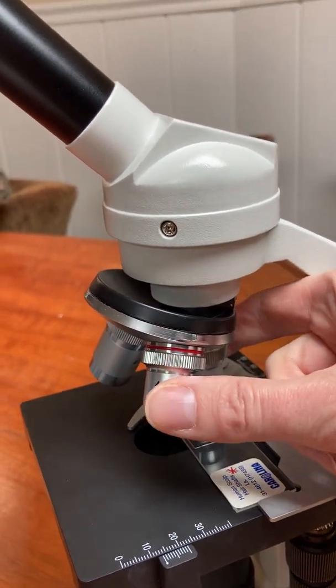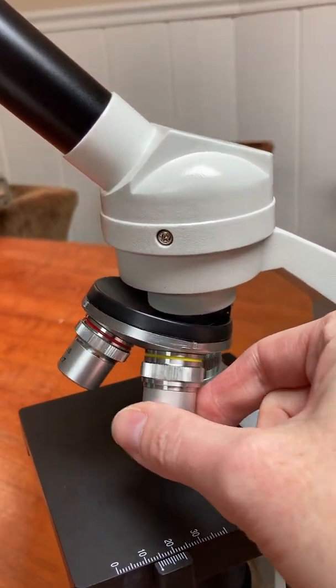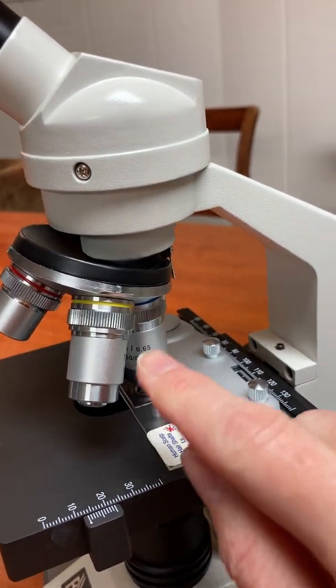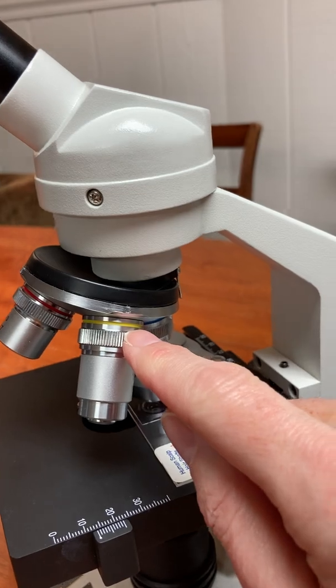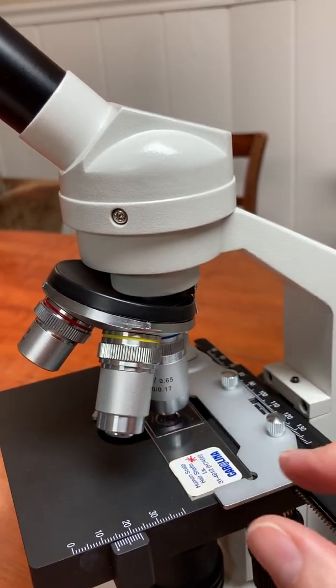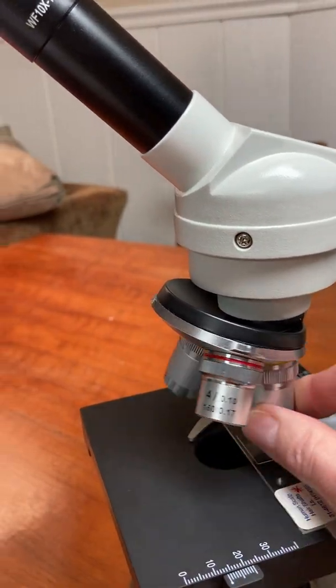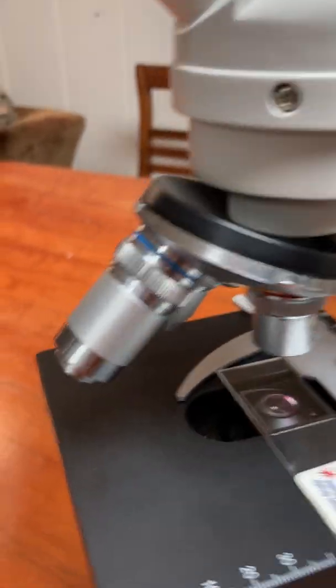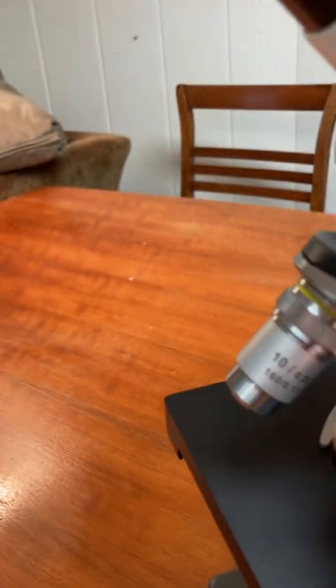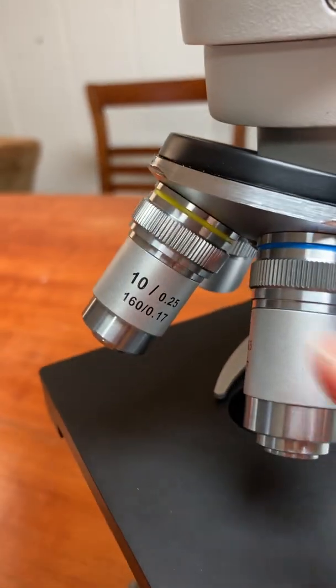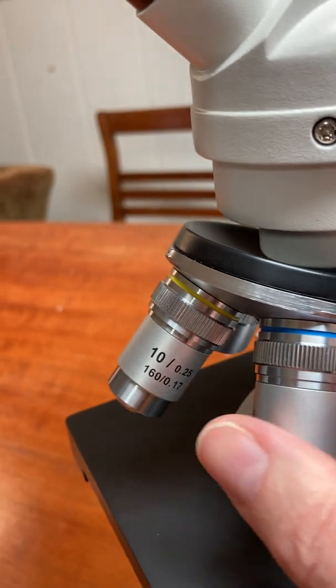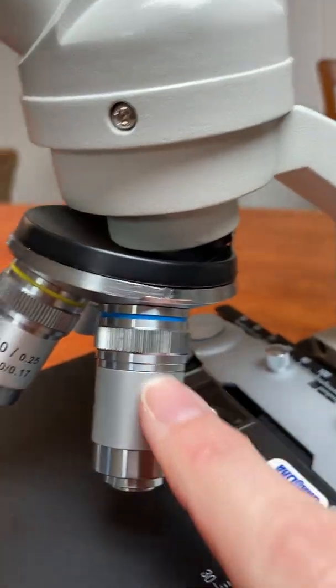And now I'm going to move the nose piece so that the middle power objective is facing us and see how it has a yellow ribbon around the top. This is low power. And if you look on the other side, there it is. It has a number 10 on it and that is the power of that objective.